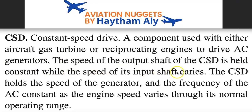The main engine speed always varies. The Constant Speed Drive holds the speed of the generator and the frequency of the AC generator constant as the engine speed varies through its normal operating range. The gas turbine or reciprocating engine speed is always variable, so we need a component to convert that variable speed of the engine into a fixed speed that the AC generator requires.